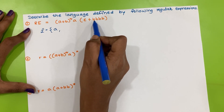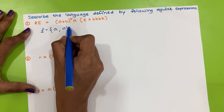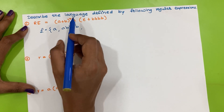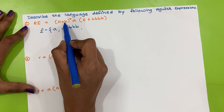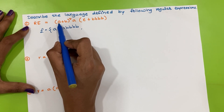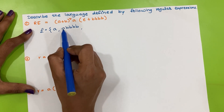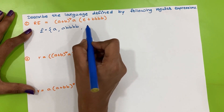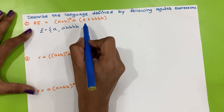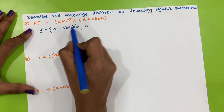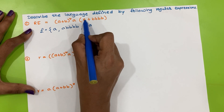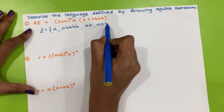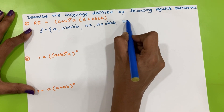If instead of empty we take 'bbbb', then the string will be 'a, b, b, b, b'. For the next combination, the smallest possible value from (a+b)* is again empty. If we take the next power of (a+b)*, the smallest string is single 'a', which concatenates with the compulsory 'a'. Taking empty gives 'aa', or we can have 'aa·bbbb' or 'ba·bbbb'.